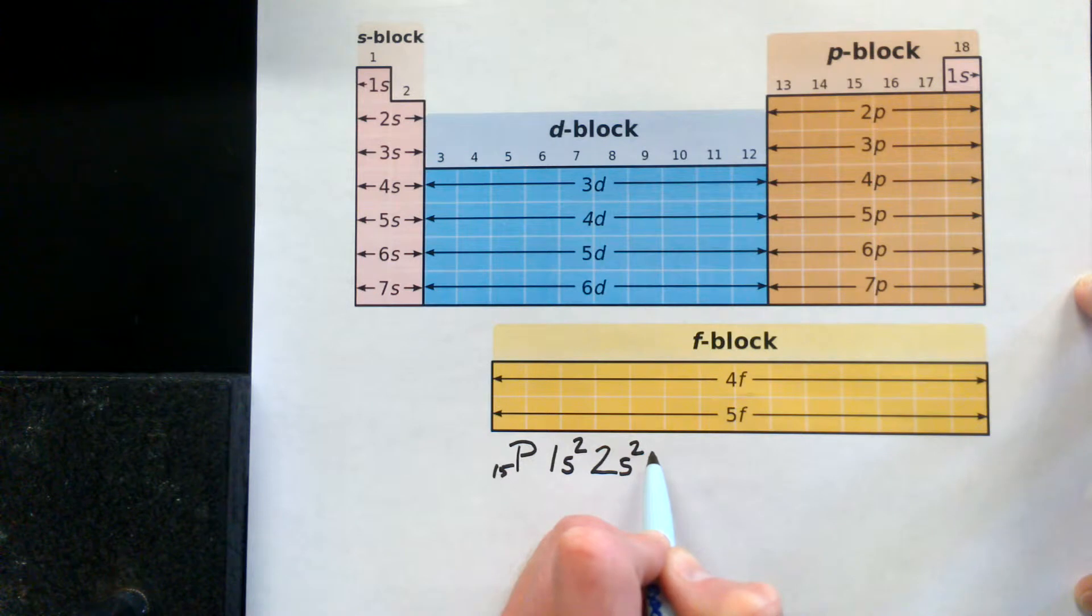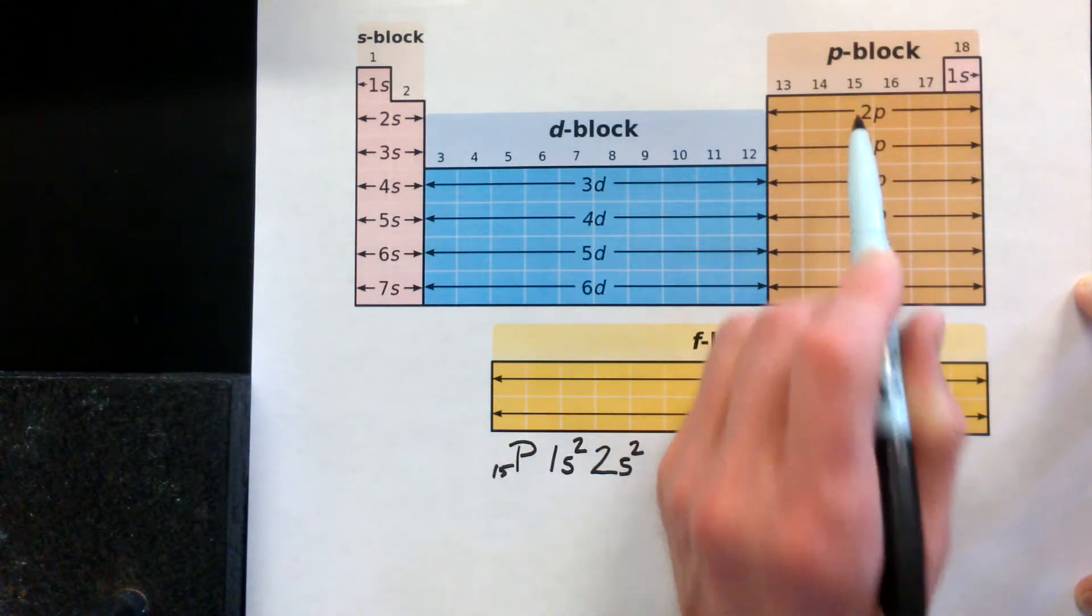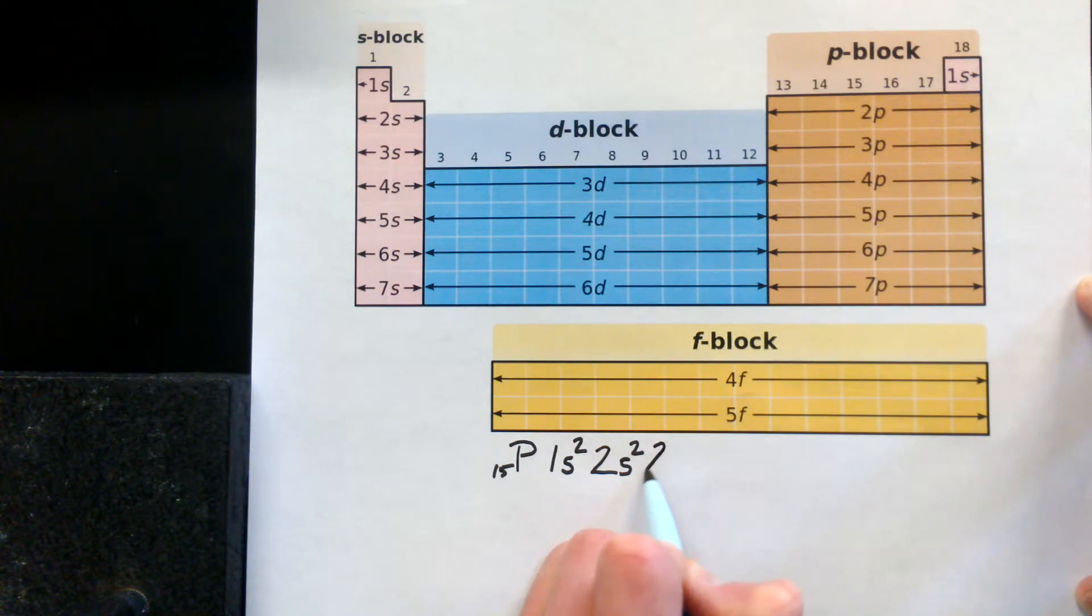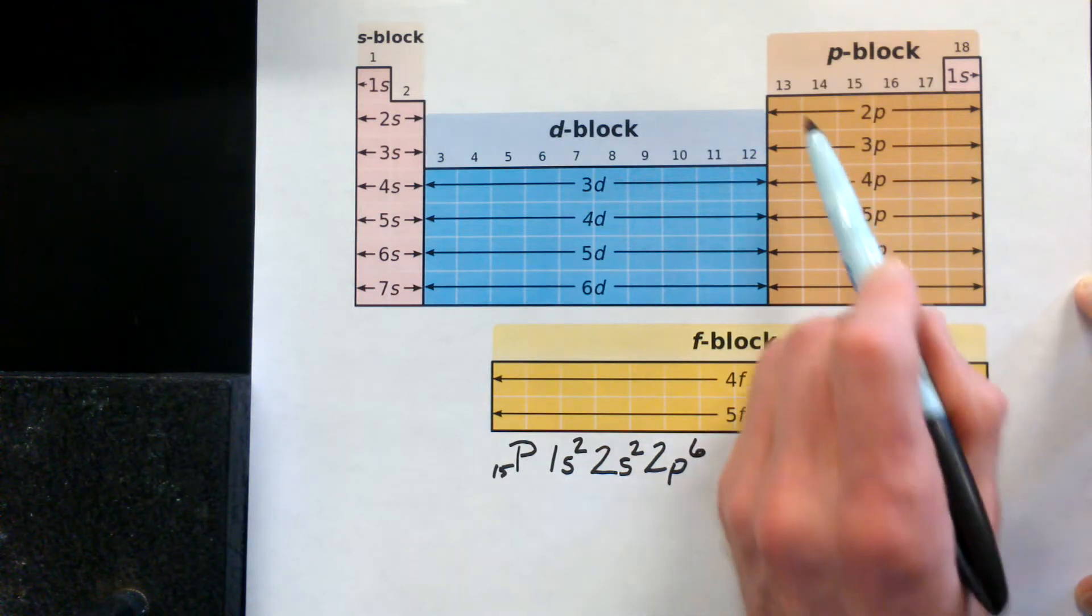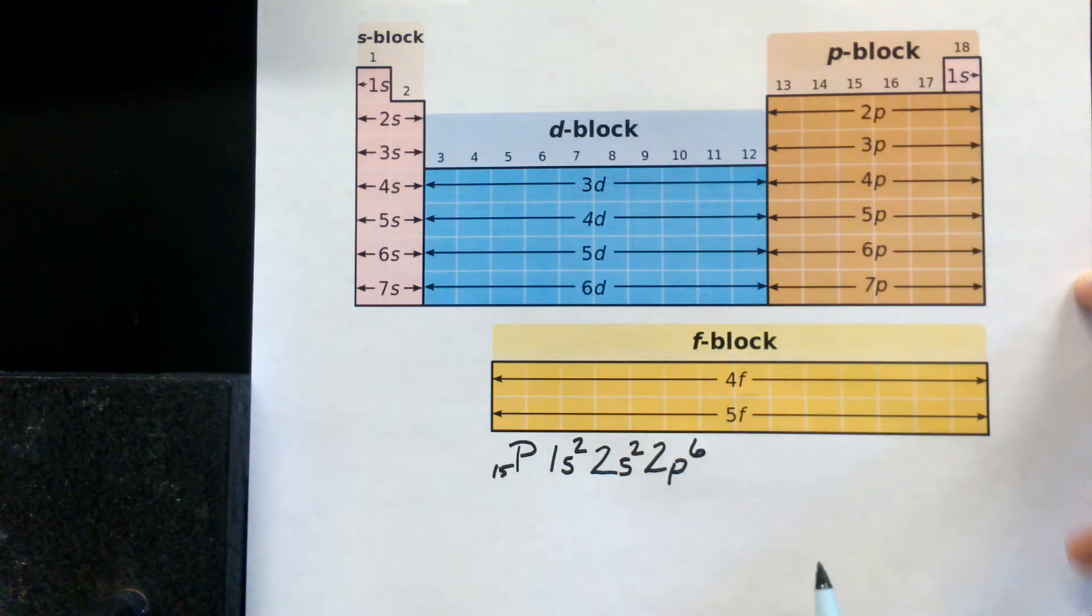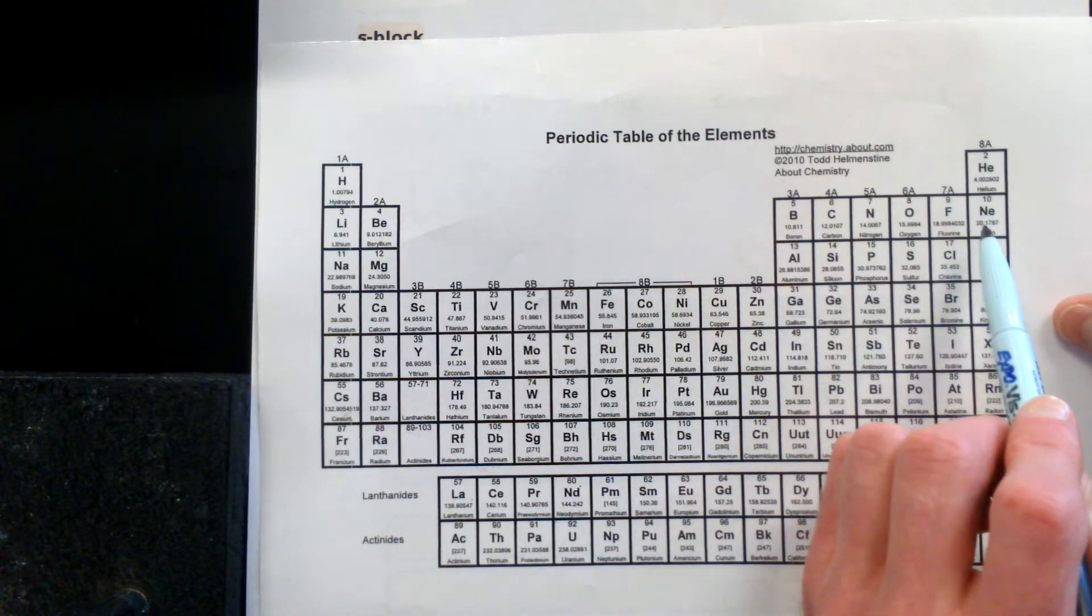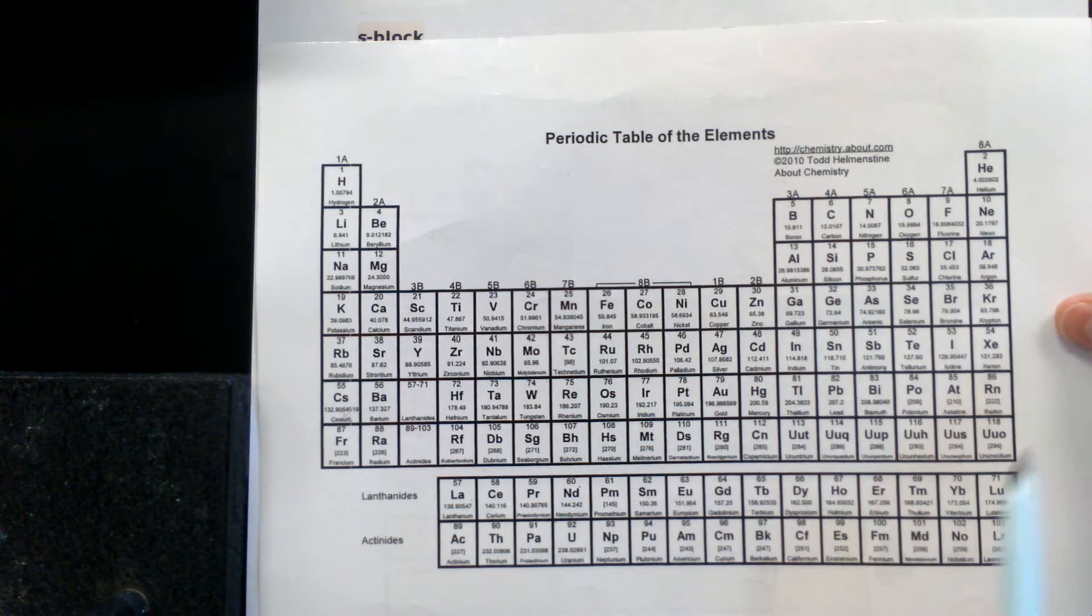We have eleven left, so we continue forward. We're still on the second level of electrons, second energy level. Now we're into the p orbital, and we have a total of six: one, two, three, four, five, six - six electrons. At this moment we have ten electrons. We would have configured neon's arrangement. We have five left.